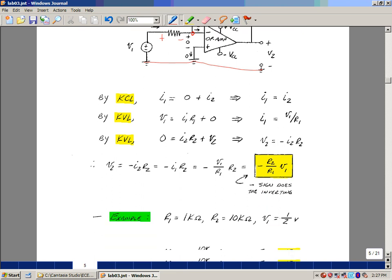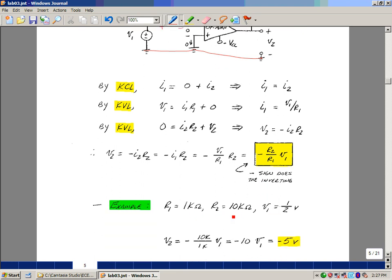Let's take a look at a simple example. Suppose that I've got a 1K resistor for R1, a 10K for R2, and half a volt input. My equation here says that the output is R2 over R1 times V1, and that's going to be minus 10 times a half, or minus 5 volts.